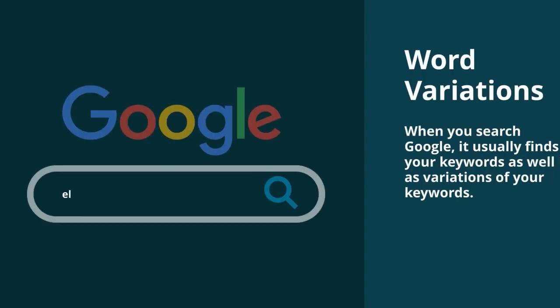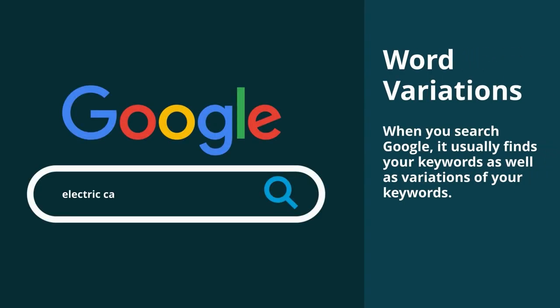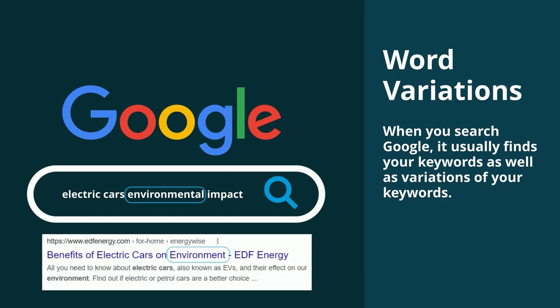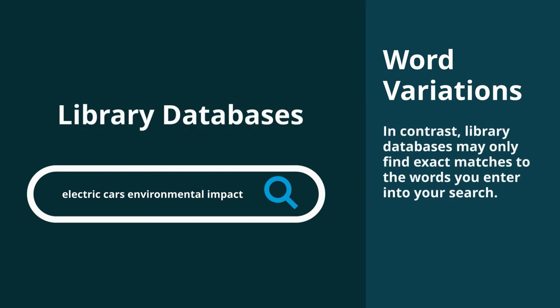When you search Google, it usually finds your keywords as well as variations of your keywords. For example, Google searches for the word 'environmental' but also finds 'environment.' In contrast, library databases may only find exact matches to the words you enter into your search.